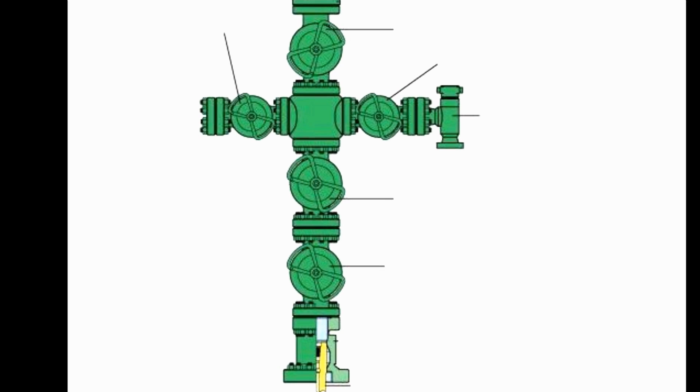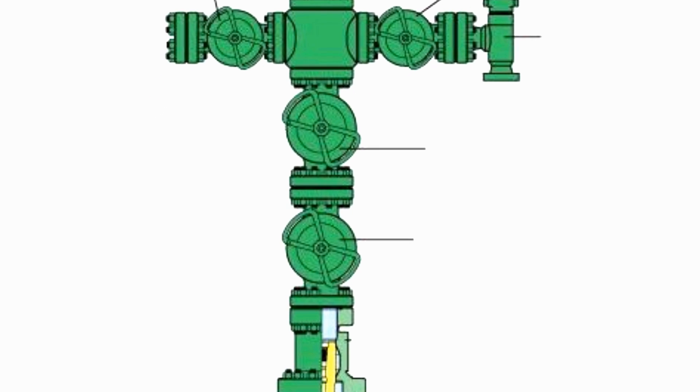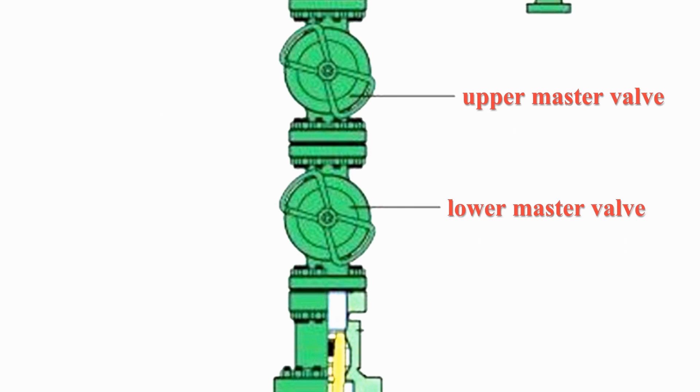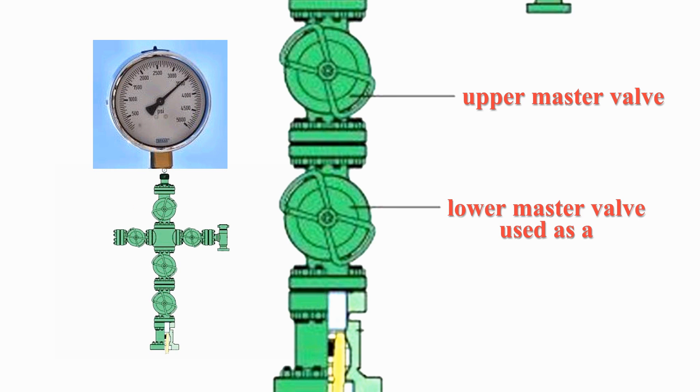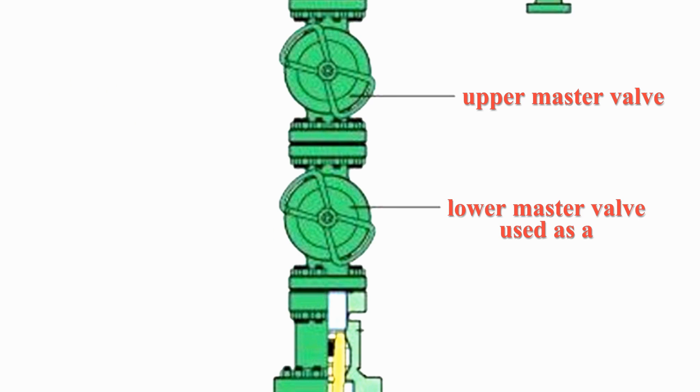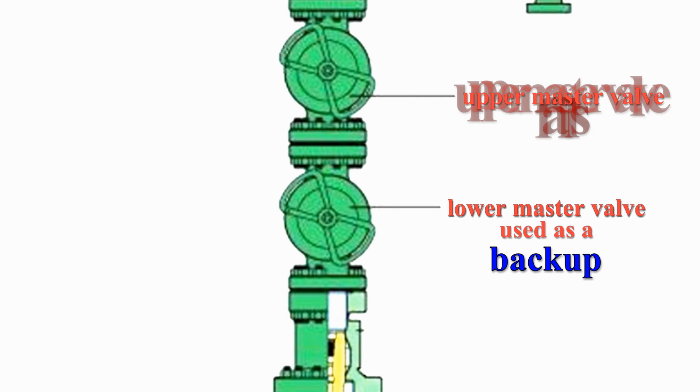Let's start with the dual master valves which are used to shut in the well. The top valve controls the well's pressure. The bottom valve acts as a backup. Usually kept open, the bottom valve can be used in the event that the first valve fails for whatever reason.